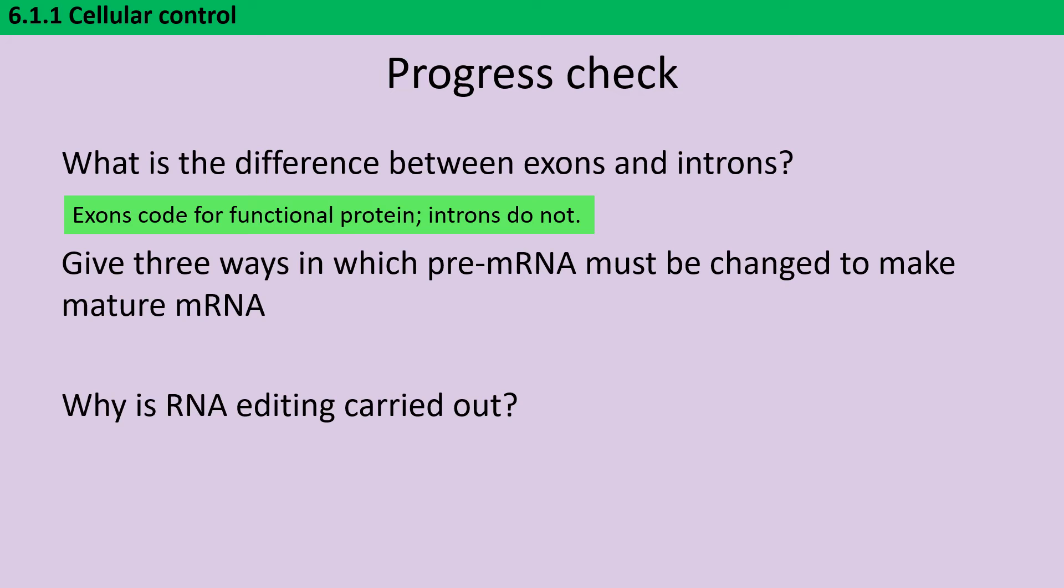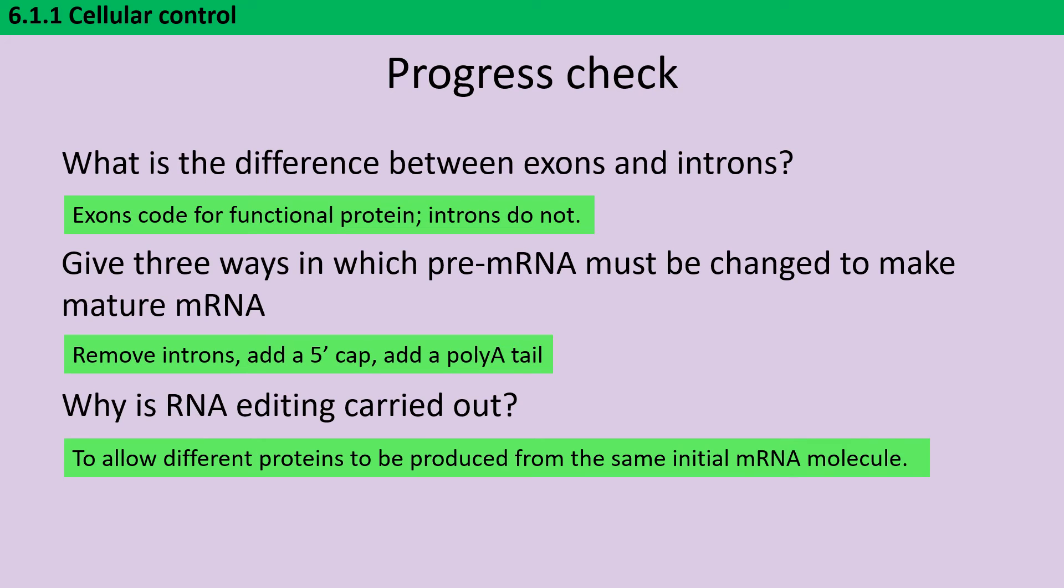In order to make mature mRNA, the pre-mRNA must be spliced. It must have a five-prime cap added, and it needs a poly-A tail. RNA editing is carried out so that lots of different proteins can be made from the same mRNA molecule.